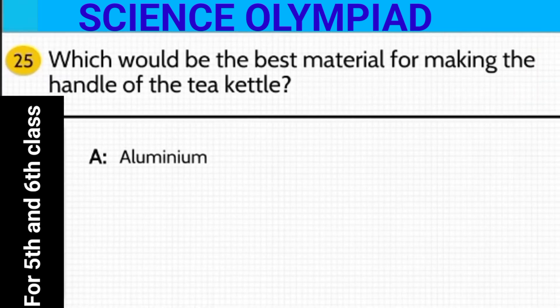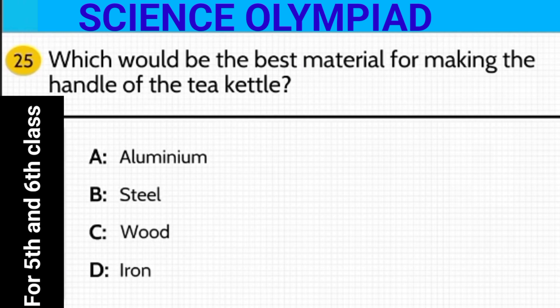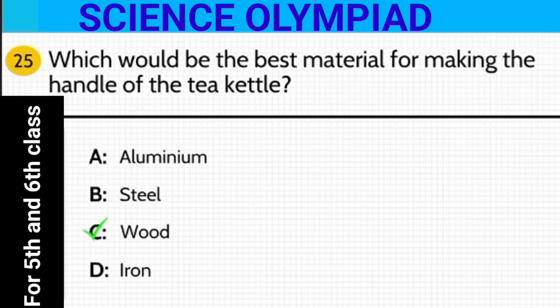Which would be the best material for making the handle of a tea kettle? Is it aluminum, steel, wood, or iron? The answer is wood, because wood being an insulator of heat does not pass heat from the tea kettle to our hands.